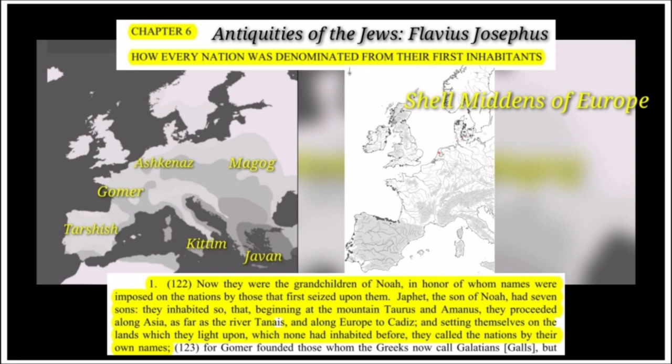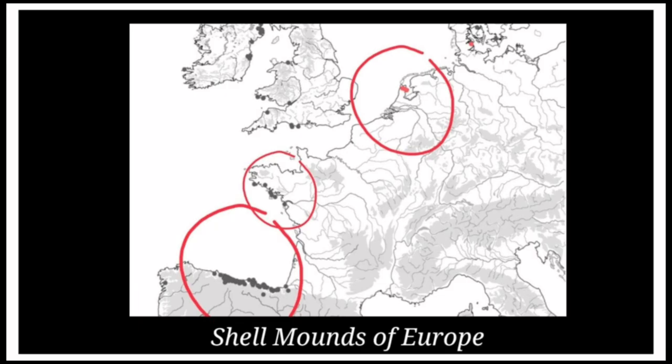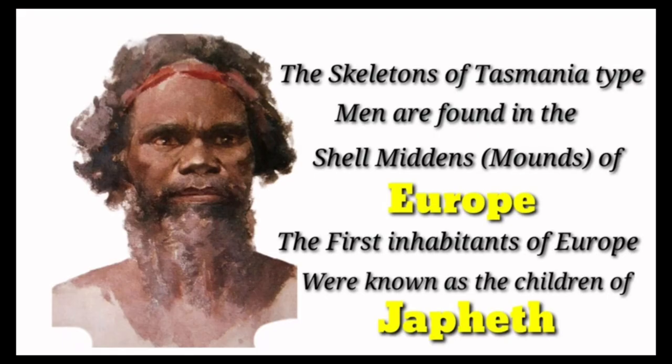On the right we have a map of shell middens of Europe. These mounds were found to contain the bones, tools, foodstuff, and other material that the earliest inhabitants — the children of Japheth — used while they occupied Europe. The skeletons of Tasmanian-type men are found in the shell middens or mounds of Europe. The first inhabitants of Europe were known as the children of Japheth.